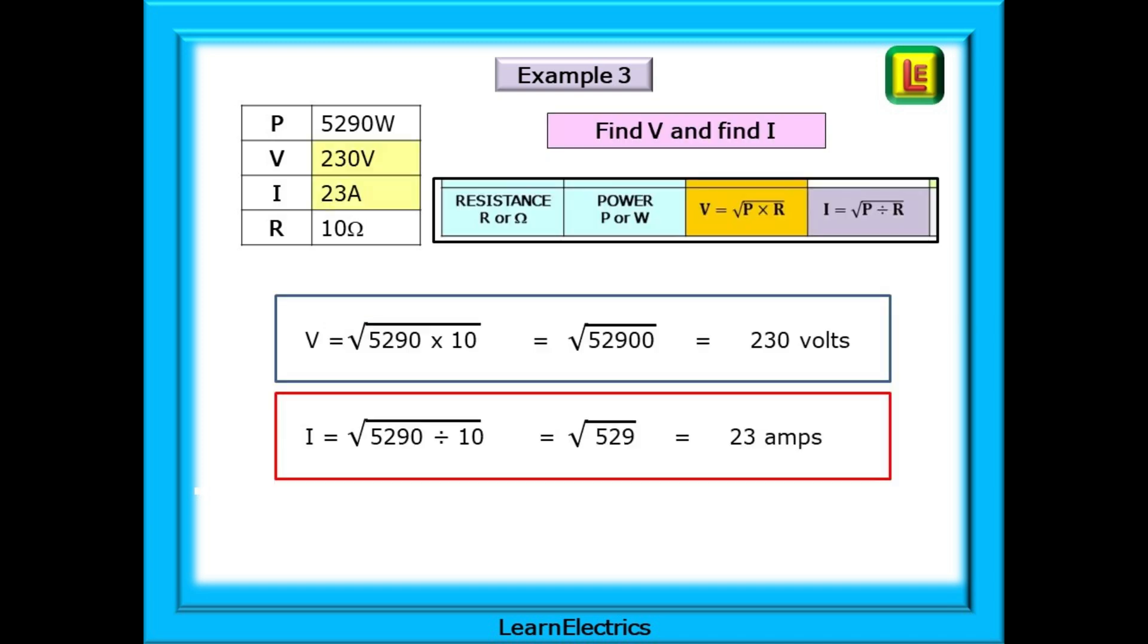These calculations involve the use of square roots, and you will need to use a calculator. You will need to know your calculator, especially in an exam. Many will use different key sequences. For the voltage, we need to find the square root of 5290 watts times 10 ohms. This then is the square root of 52900. With some calculators, the numbers are entered as square root key and then 52900. And with other calculators, the data is entered as 52900 and then the square root key.